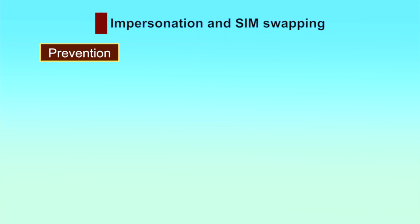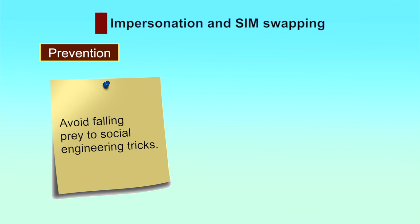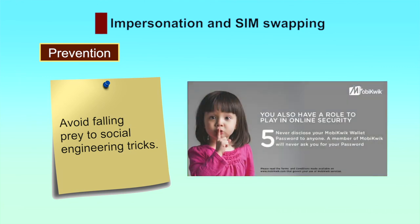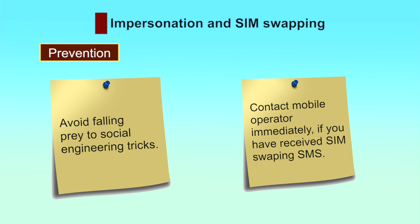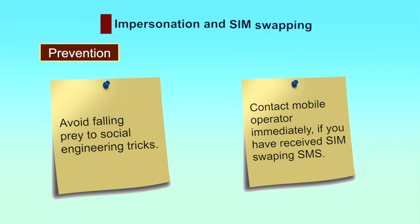For prevention against impersonation and SIM swapping attacks: number one, avoid falling prey to social engineering tricks. Financial service providers and support staff will never ask their customers for sharing their private information such as passwords or payment account numbers over email requests or phone inquiries. Number two, some mobile network operators send an SMS to alert their customers of a SIM swap. The affected customer can act and stop this fraud in its tracks by contacting the mobile operator immediately.